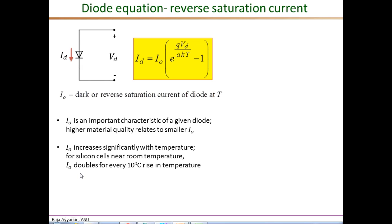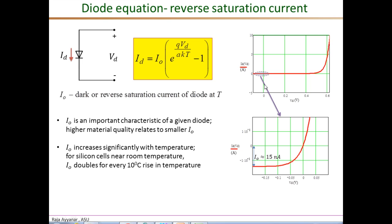For silicon cells near room temperature, this reverse saturation current IO doubles for every 10 degree Celsius rise in temperature. The plot here shows the diode current-voltage characteristic. You can see this exponential rise in the diode current, especially after about 0.5 volts or so for each individual diode. The portion near around 0 and small negative voltage is zoomed in and shown in the lower plot to see this IO clearly. The scale here is 10 nanoamperes per division, so the reverse saturation current at slightly negative voltage almost remains constant for larger negative voltages. That is equal to about 15 nanoamperes, a typical value for the kind of PV cells we are considering.